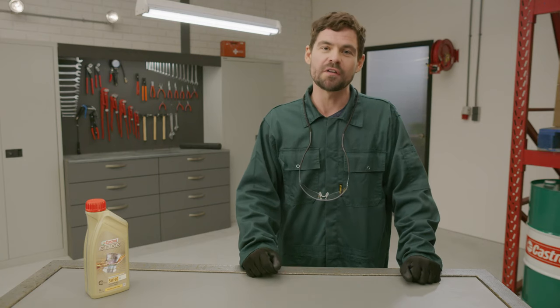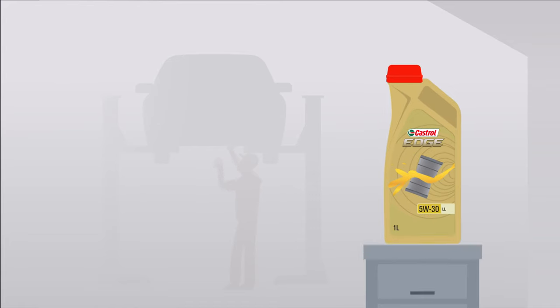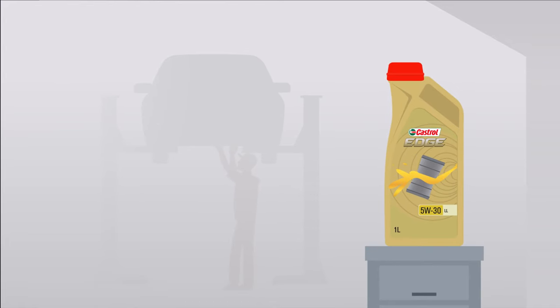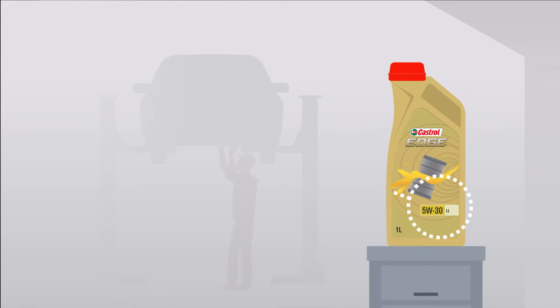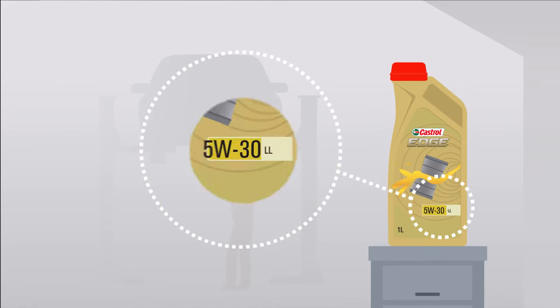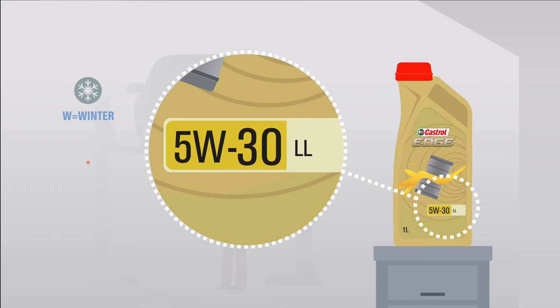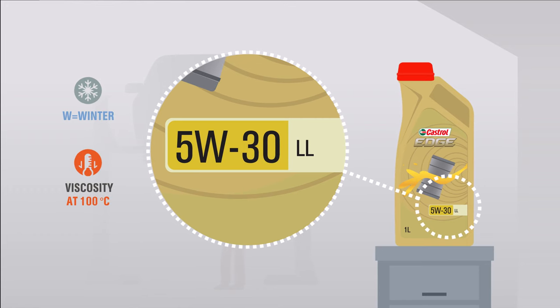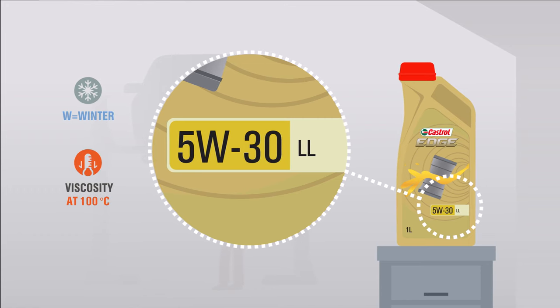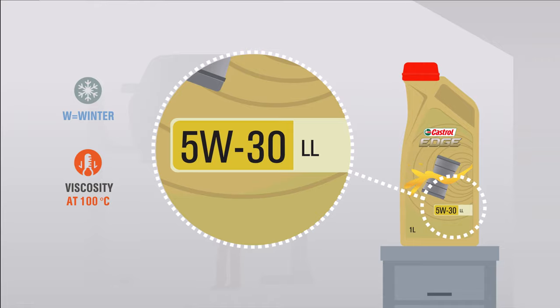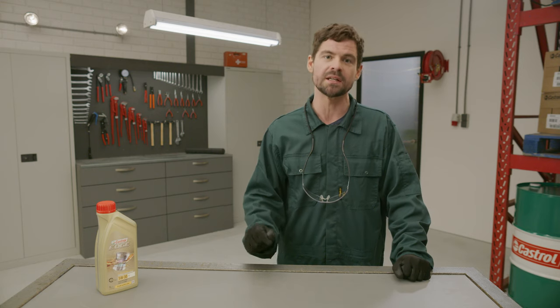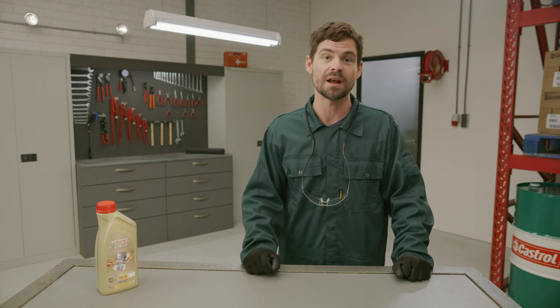It's quite simple actually. The number before the W, which stands for winter, indicates the viscosity at low temperature — for example, before you start your engine. The number mentioned right after the W stands for viscosity at 100 degrees Celsius, which is near the normal operating temperature of your engine.